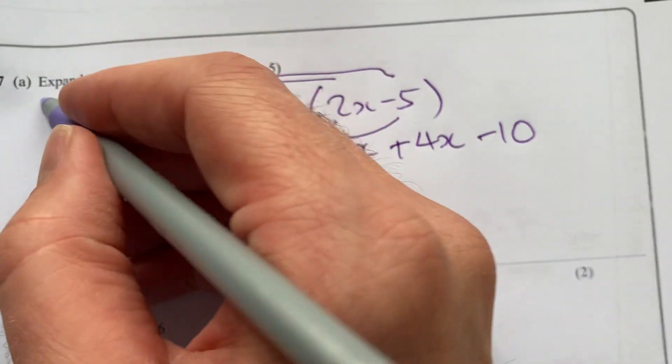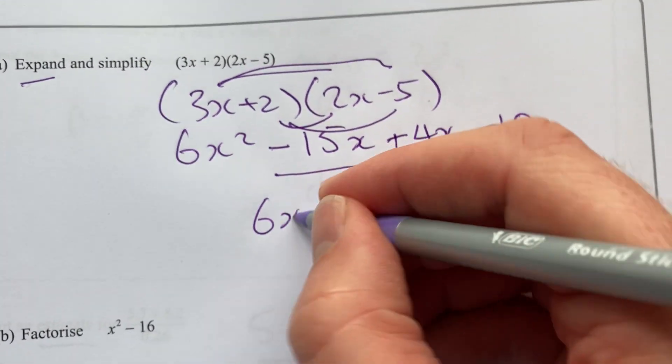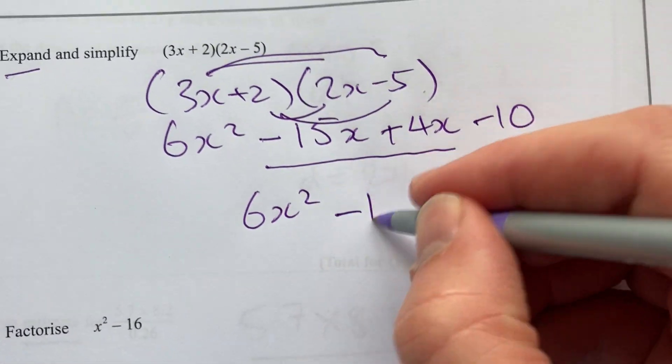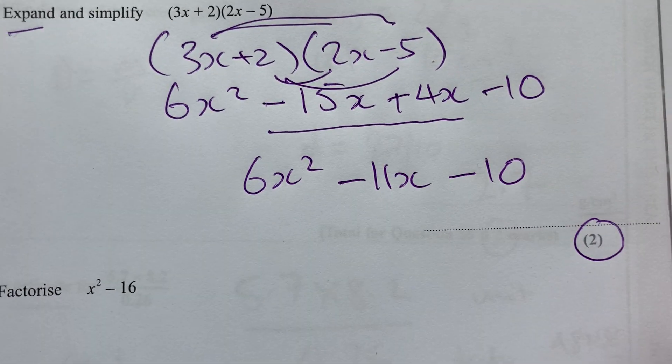Now I have to simplify any like terms. You have to collect them. There's no other x squareds, but minus 15x plus 4x is minus 11x minus 10. And that's a nice two-mark question.